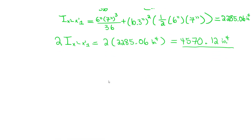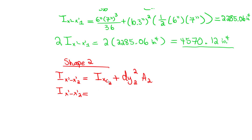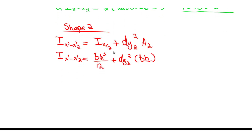Now let's focus on shape two, the rectangle. Using the same procedure with the parallel axis theorem: I_x'x' for shape two equals I_x about the centroid for shape two plus dy₂² times the area of shape two. For a rectangle, I_x about the centroid equals base times height cubed divided by 12, and the area is base times height. We need to find dy₂.